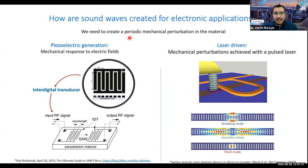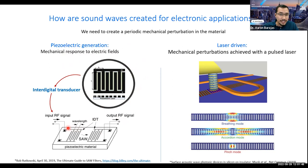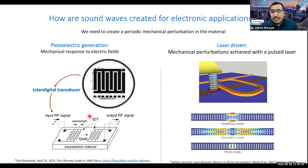The basic idea is that we need to create a periodic mechanical perturbation in the material. The most common method is piezoelectric generation, which uses materials that have a mechanical response to electric fields. One way to create waves is to deposit metallic contacts in a comb shape and apply a radio frequency signal through them, creating patterns of contractions and expansions that generate surface acoustic waves. The wavelength of that wave is defined by the separation between these metallic contacts.